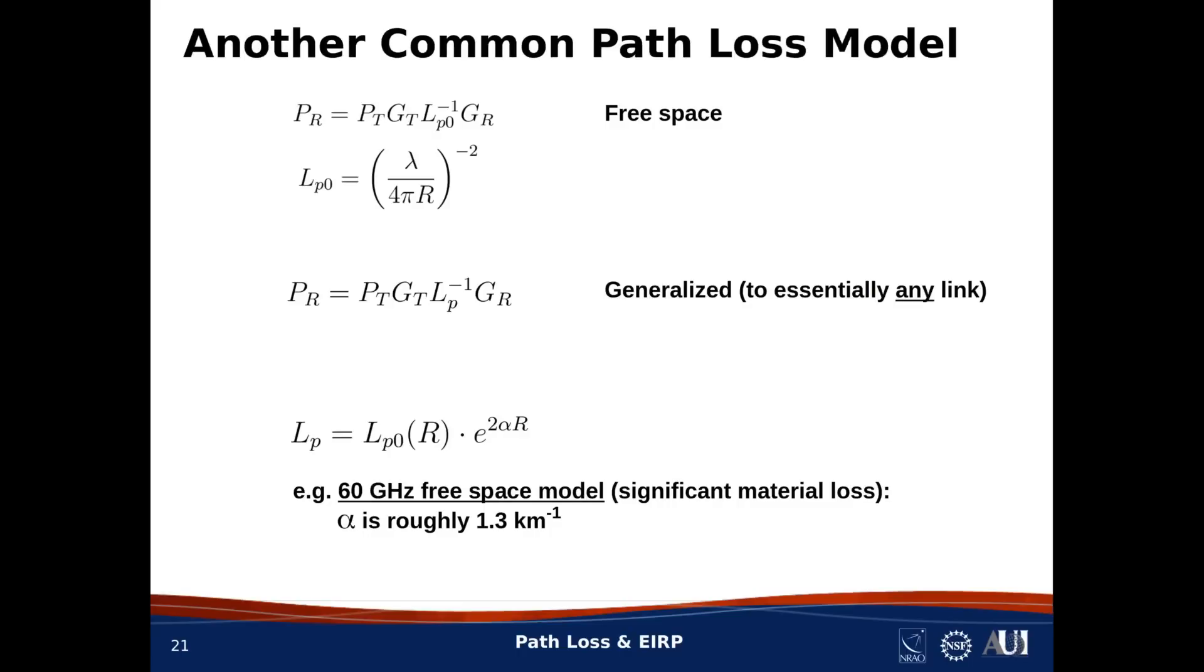Now appearing at the bottom of this slide is yet another generalization of the path loss model. In this case, we say the spreading loss goes in free space, but there is an additional factor of E to the 2 alpha R. If alpha is 0, you get the free space model. By making alpha greater than 0, then you're modeling absorption of power into the medium through which the wave is traveling. A common application of this form of the model is to model terrestrial radio links operating around 60 gigahertz. 60 gigahertz is special because at this frequency, the air itself absorbs power directly from the wave. In this case, alpha turns out to be something like 1.3 inverse kilometer, so you end up with additional path loss of something like 11 dB per kilometer.